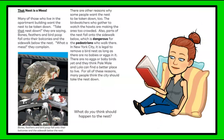That nest is a mess. Many of those who live in the apartment building want the nest to be taken down — take that nest down, they are saying. Bones, feathers, and bird poop fall onto their balconies and the sidewalk below the nest. What a mess, they complain. There are other reasons too — the bird watchers who gather to watch the hawks are making the area too crowded. Also, parts of the nest fall onto the sidewalk below, which is dangerous for the pedestrians who walk there. In New York City, it is legal to remove a bird's nest as long as there are no babies or eggs in it. There are no eggs or baby birds yet, and they think Pale Male and Lola can find a better place to live. For all these reasons, many people think the city should take down the nest.